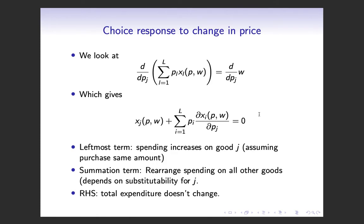For example, if the price of jelly goes up, you'll probably buy less peanut butter — you're going to make fewer peanut butter and jelly sandwiches. Or if the price of hot dogs goes down, you might buy more hot dog buns. All of that is captured in the summation term. The leftmost term tells us how much spending increases on good j assuming you purchase the same amount, and the summation captures the rearrangement of all other goods. Since the right-hand side is zero, these two things must cancel out — extra spending from a price increase can't change total expenditure.